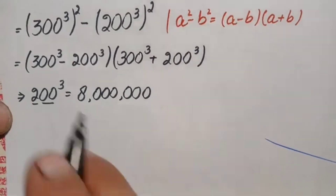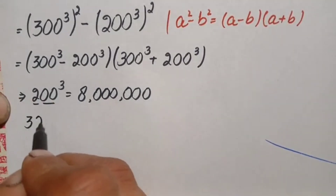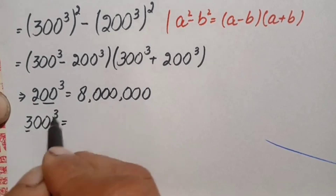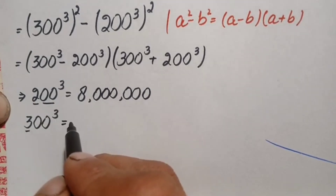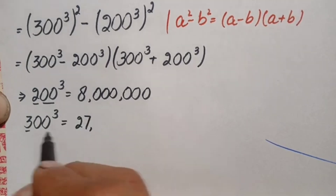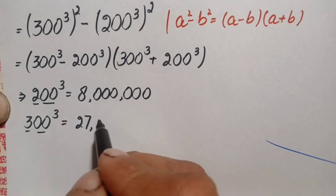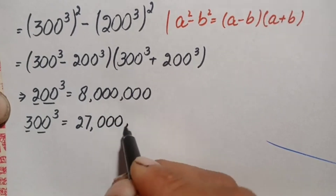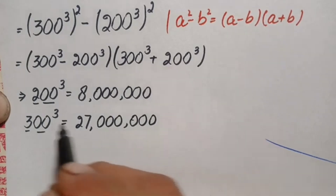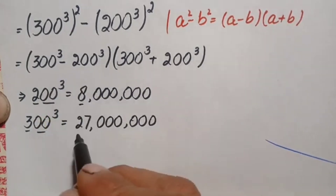Now we find 300³. The value of 3³ is 3 × 3 = 9, and 9 × 3 = 27. Again, writing the two zeros three times gives six zeros. So 300³ = 27,000,000, which is 27 million.